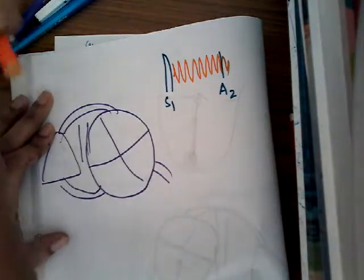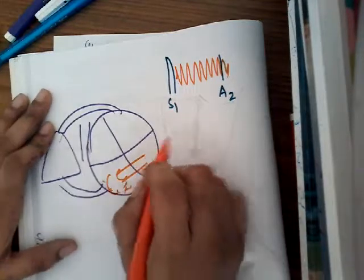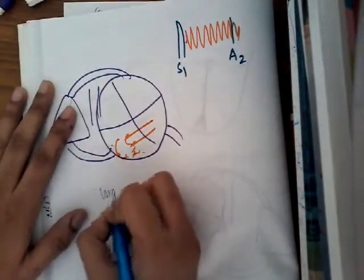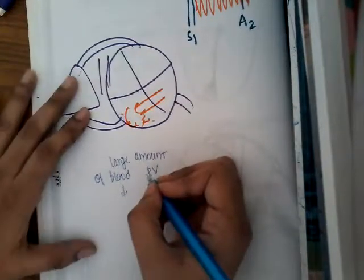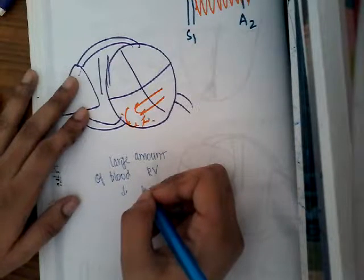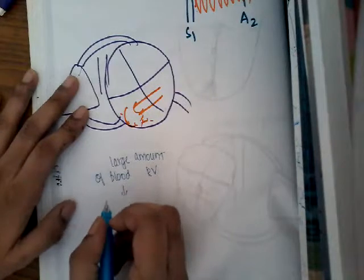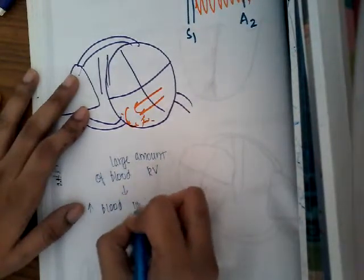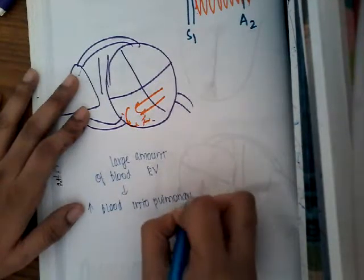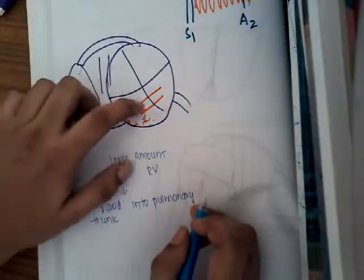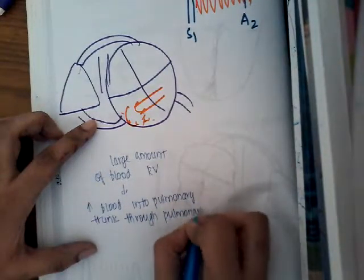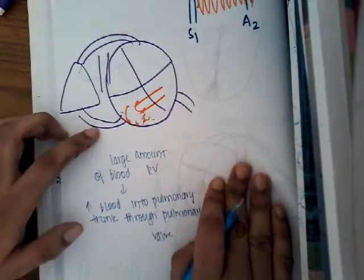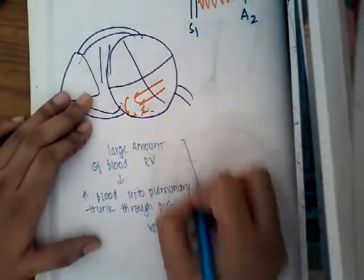The blood has now reached the right ventricle, so there is a large amount of blood in the right ventricle. This increased blood in the right ventricle causes increased blood flow into the pulmonary trunk through the normal-sized pulmonary valve. Because blood flow through the pulmonary valve is increased, there is an ejection systolic murmur at the pulmonary area.